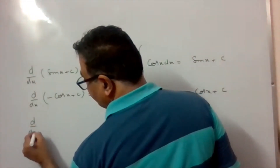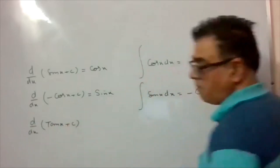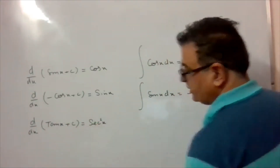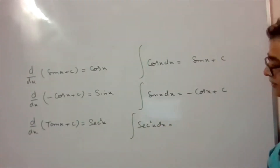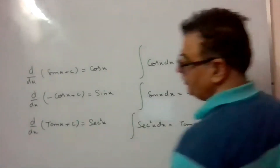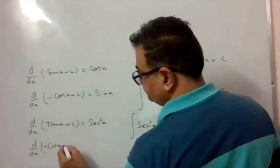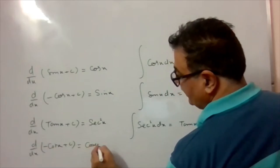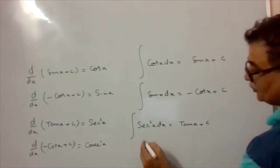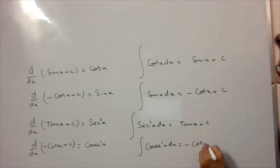d/dx of tan x = sec²x, so integration of sec²x dx = tan x + C. Similarly, d/dx of (-cot x) = cosec²x, so integration of cosec²x dx = -cot x + C.